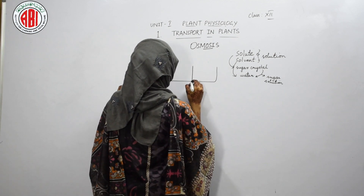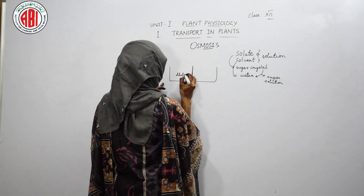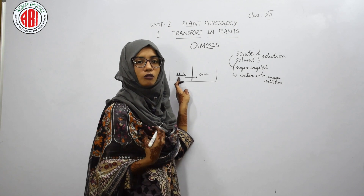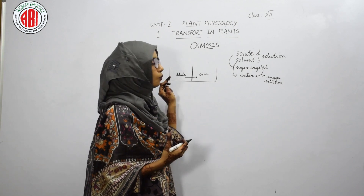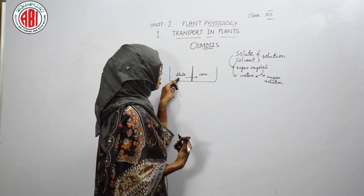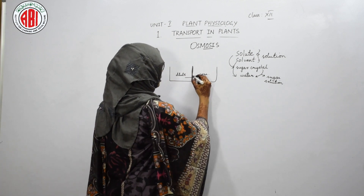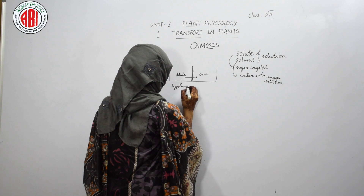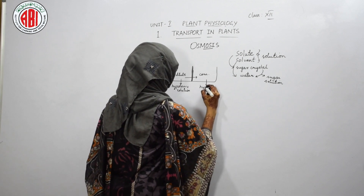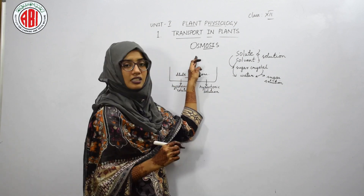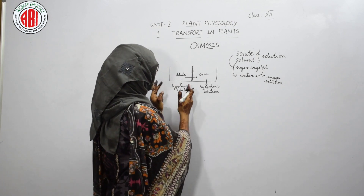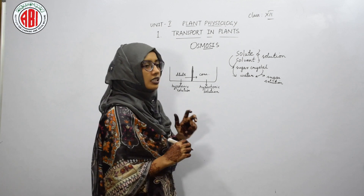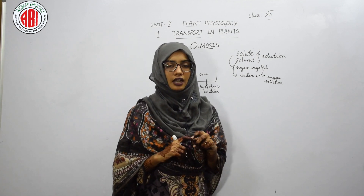Coming back to osmosis — it is a process in which the water molecules from the dilute solution move towards the concentrated solution. The dilute solution is not more concentrated when compared to the concentrated one. So water molecules or solvent particles move from dilute solution to concentrated solution across a semi-permeable membrane. This process is called osmosis. Dilute solution is also referred to as hypotonic solution, and concentrated solution is also termed hypertonic solution.